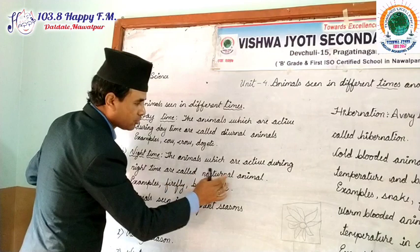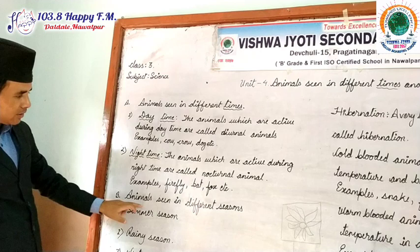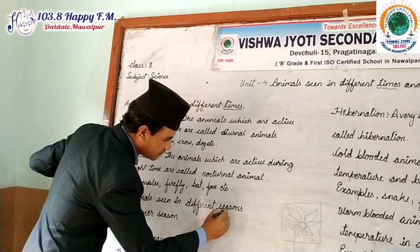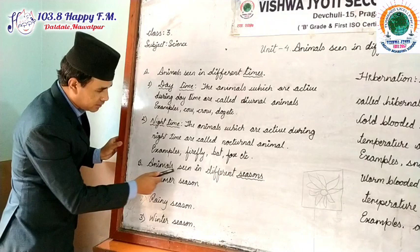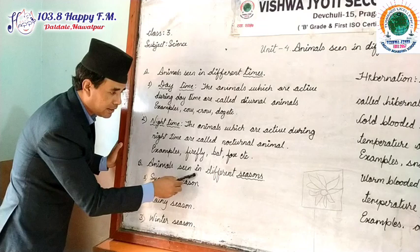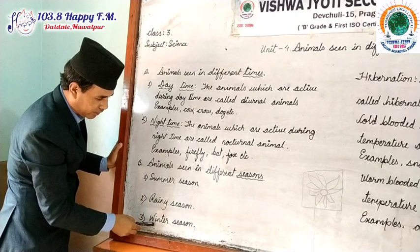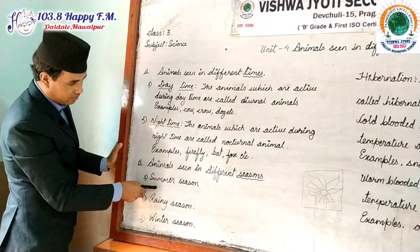Point B: Animals seen in different seasons. Here we divide animals into three categories: summer season, rainy season, and winter season.